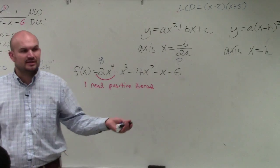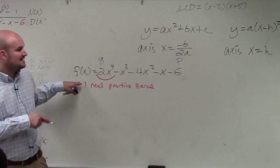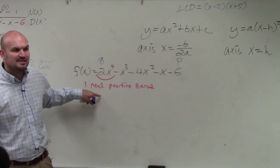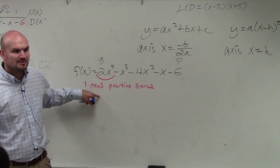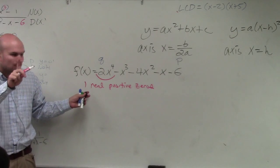However, let me just give you an example. What if you find out that one is a zero? Would you test the positive two as a zero? No, because Descartes' rule of signs says there's only one real positive zero.